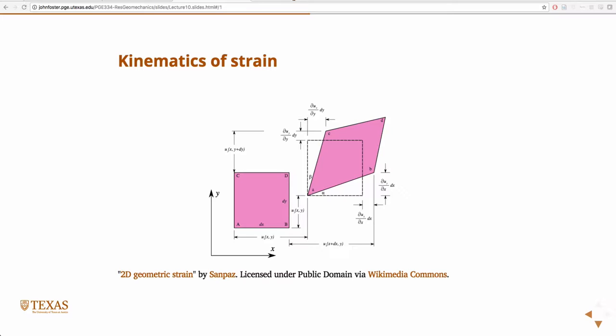In 2D, now we have two dimensions of deformation. We can take this, so this is our original, instead of having a bar, now we have a cube. And we can stretch it in two directions, in the X and the Y. And we can possibly get some deformation that looks like this.